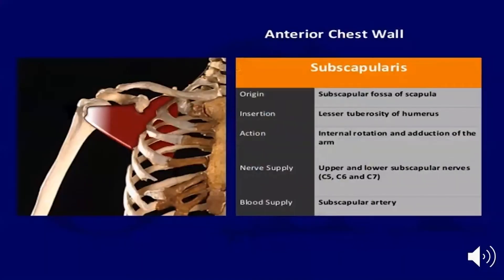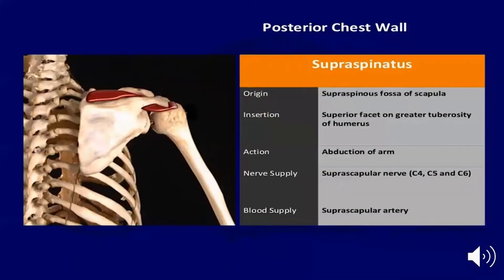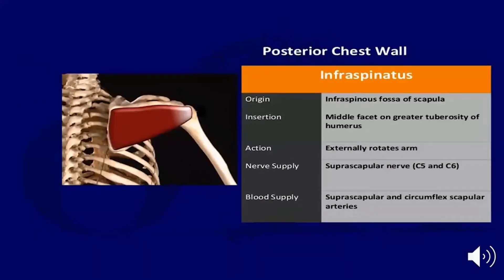The subscapularis arises from the subscapular fossa of the scapula and is inserted on the lesser tuberosity of the humerus; it is an internal rotator of the arm. The supraspinatus arises from the supraspinatus fossa and inserts on the superior facet of the greater tuberosity; it is an abductor of the arm. The infraspinatus arises from the infraspinatus fossa and inserts on the middle facet of the greater tuberosity; it is an external rotator.